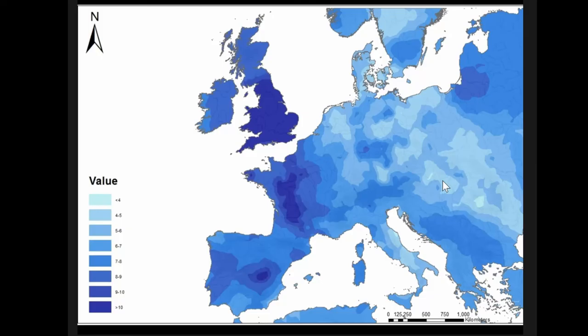I've also made a continuous surface using Kriging, using the tin values. It's visually impactful and I can again see the connection between regions with known tin mines and objects with high tin levels. Here I can see again this connection between the Atlantic world and the central part of Spain, which I think is interesting.